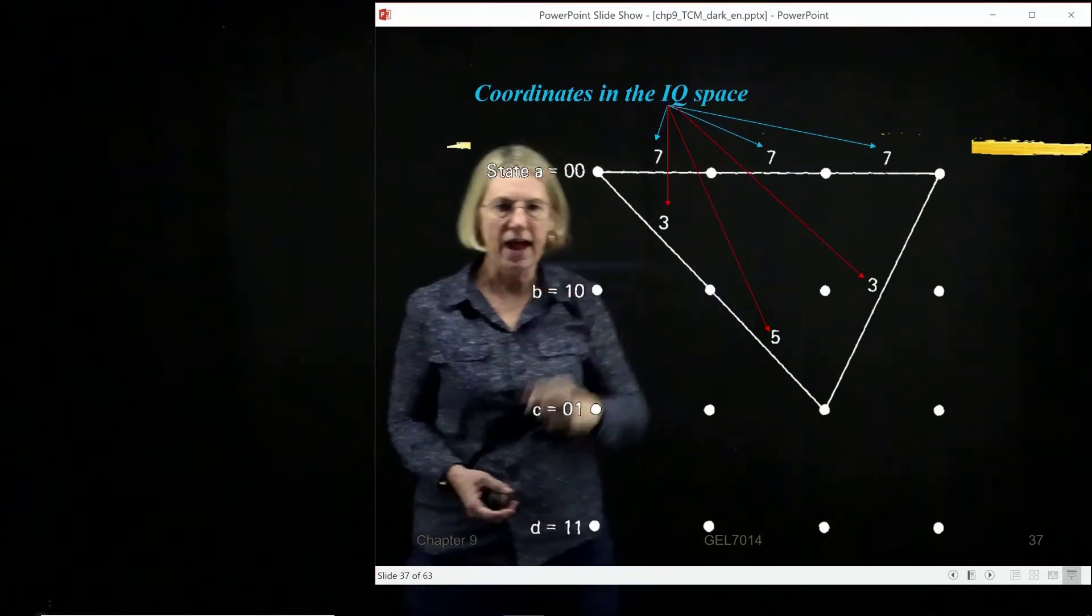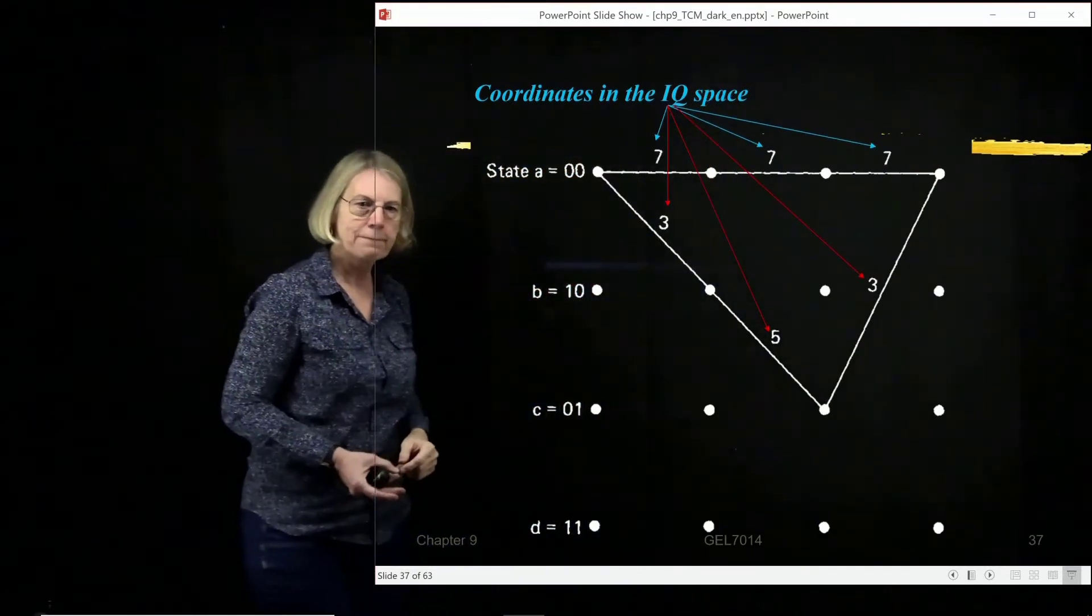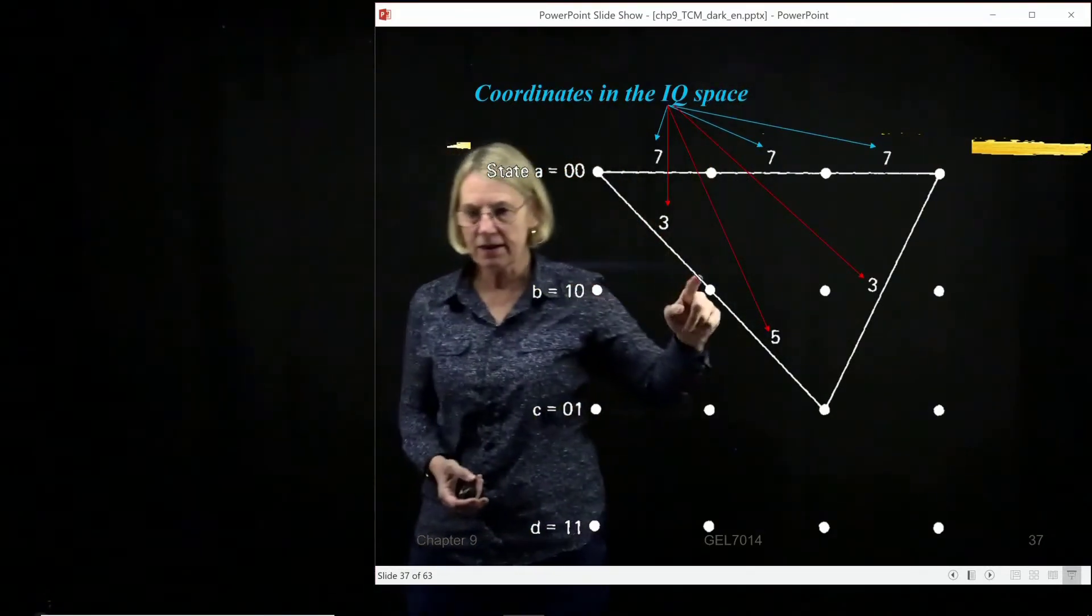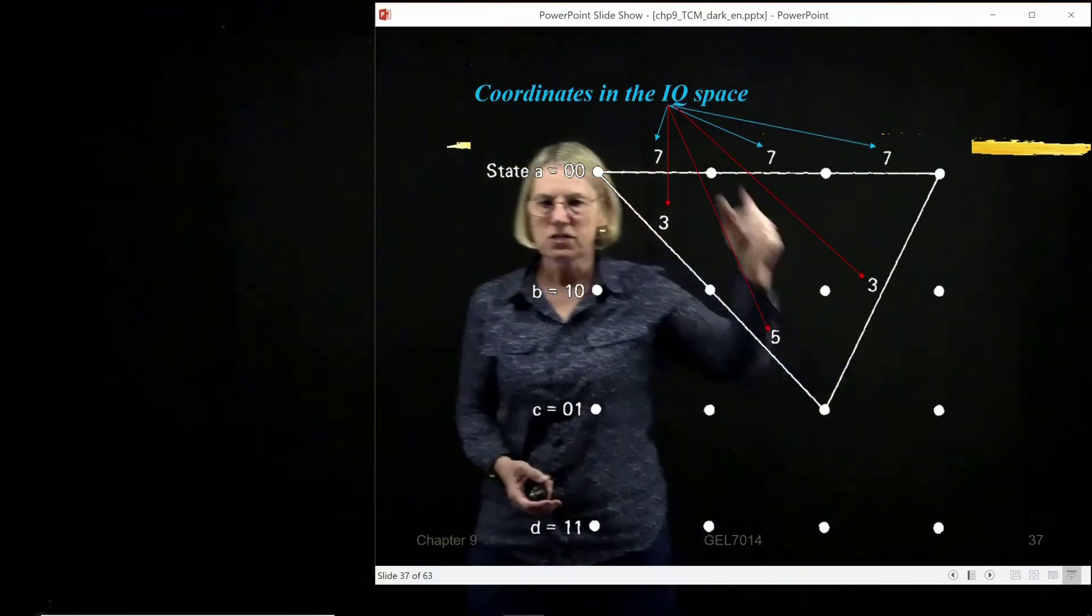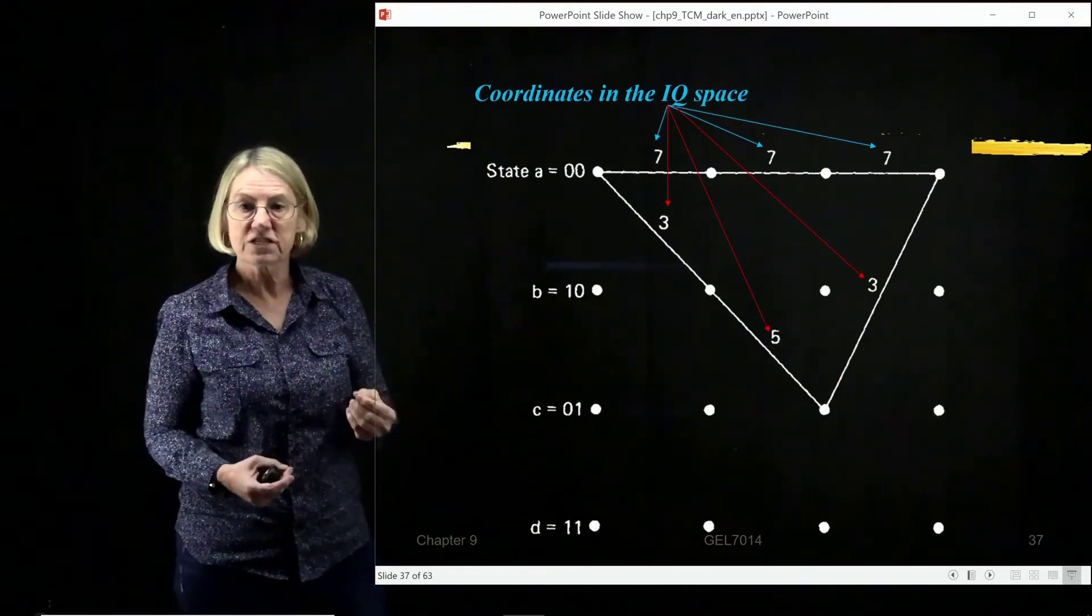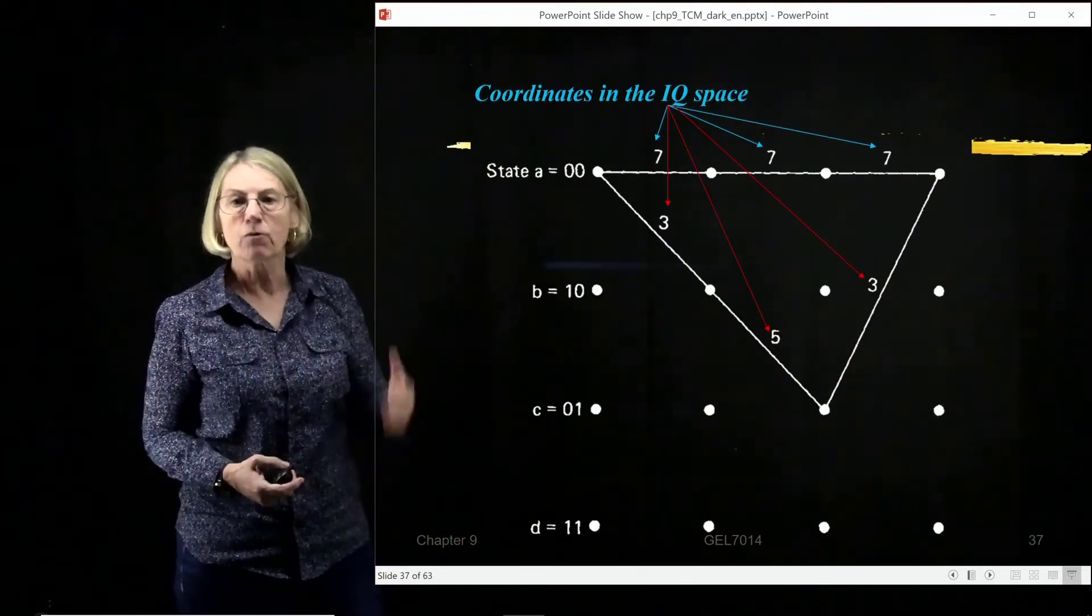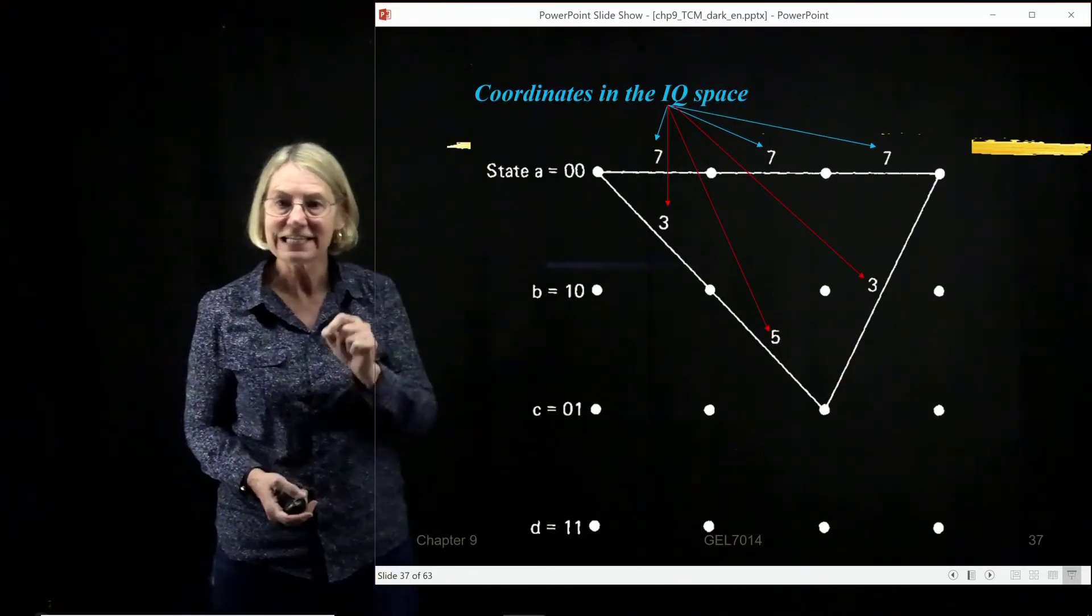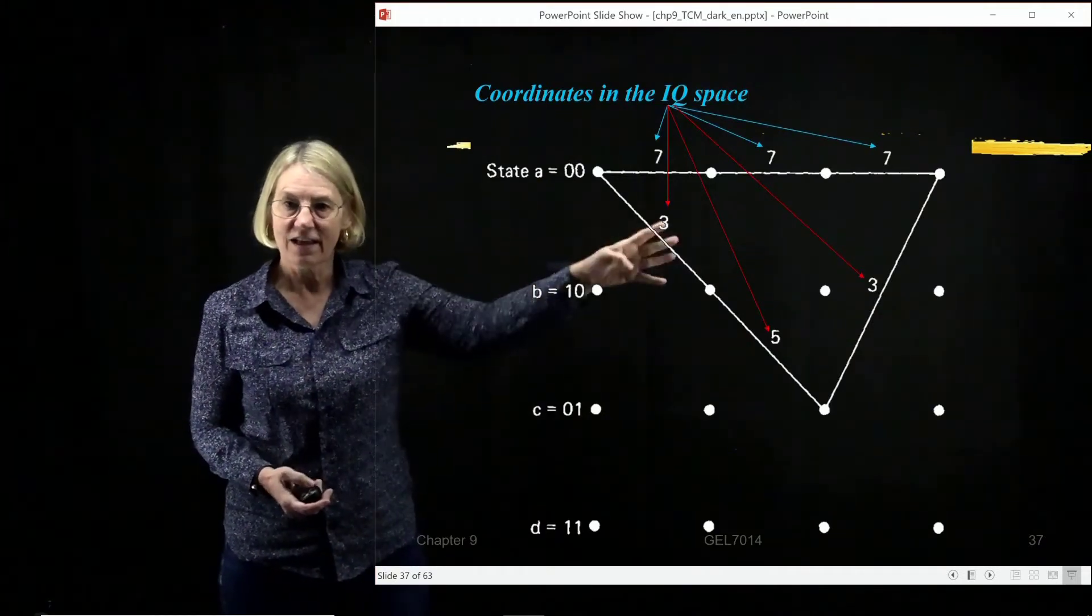IQ space, but of course it's only I because we're looking at PAM, not QAM. And then the other one was 3, and then 5, and then we had 3 again. So these are the coefficients in the IQ plane, and we're going to calculate the Euclidean distance based on these locations.